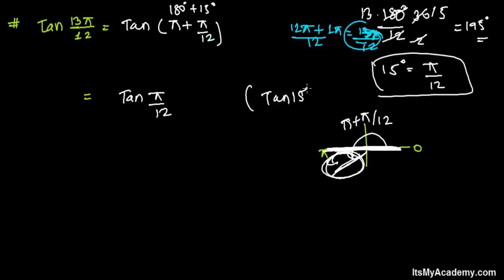Don't you think it is like tan(15 degrees)? You guys are very awesome at finding the value of tan(15). You just have to do tan(45° - 30°). The same thing I'm going to do now: tangent of 45 degrees, that's π/4, minus 30 degrees, that is π/6.